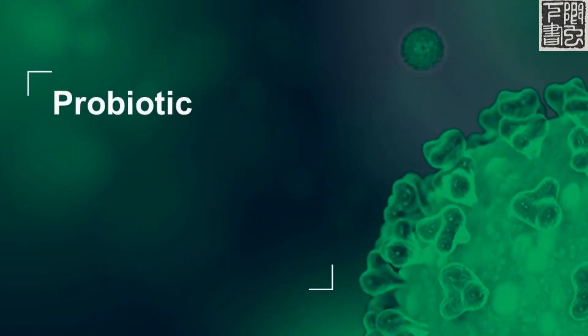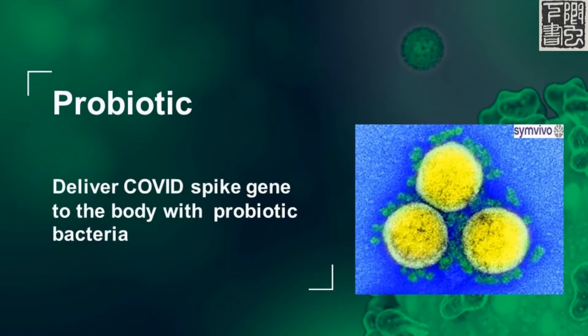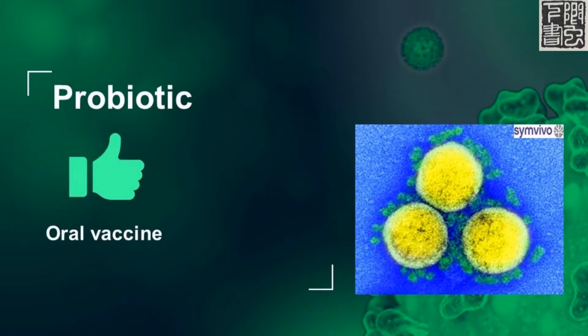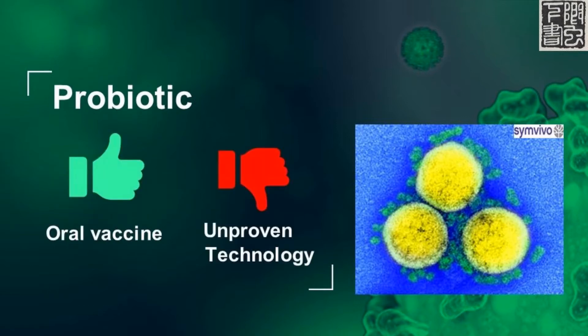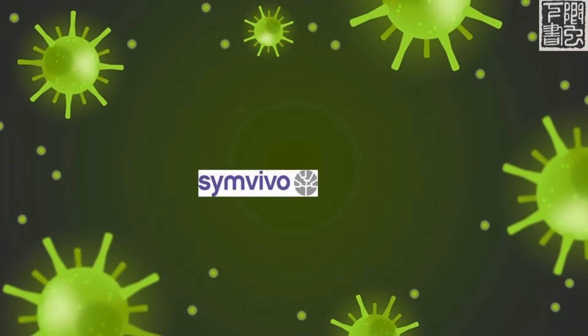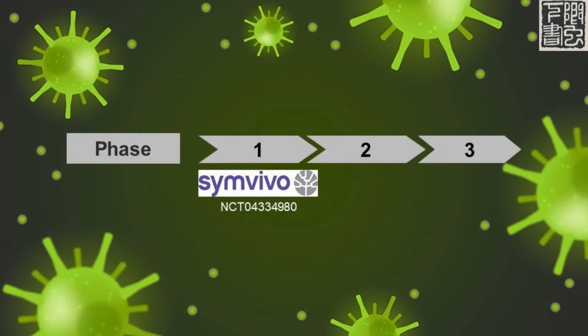The oral vaccine is made with probiotic bacteria that deliver the COVID spike gene to target cells. The vaccine is oral — no shots needed — but the technology is unproven and has no approved product. The bacterial technology platform is by Simvivo, a Canadian company, and the vaccine is in Phase 1.